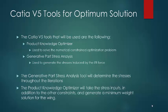The CATIA V5 tools for the optimal solution will be the Product Knowledge Optimizer and Generic Part Stress Analysis. The Generic Part Stress Analysis will be used to determine the stresses induced by the constant lift force.